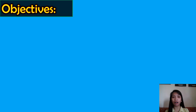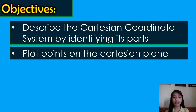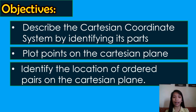In today's lesson, these will be our objectives. First, to describe the Cartesian coordinate system by identifying its parts. Second, to plot points on the Cartesian plane and identify the location of ordered pairs on the Cartesian plane.